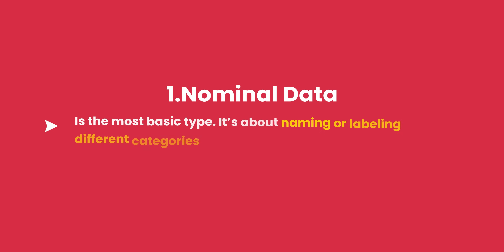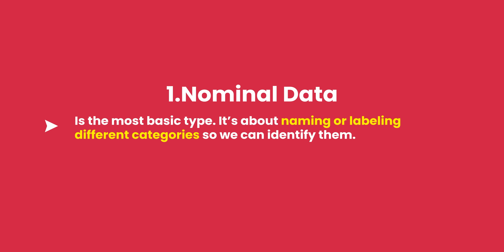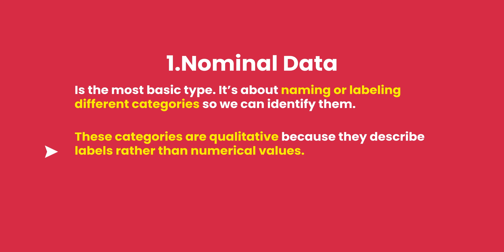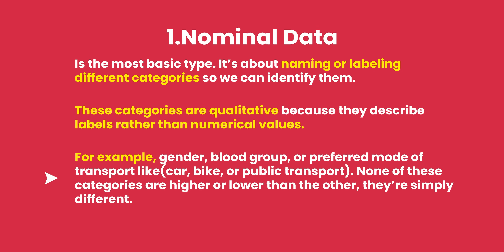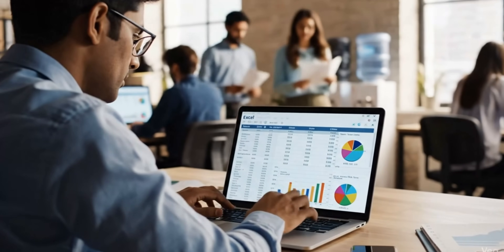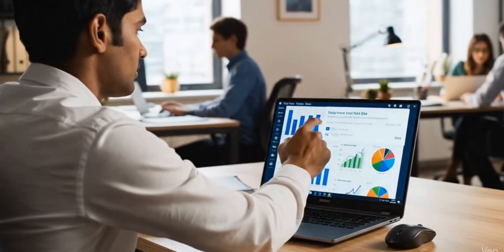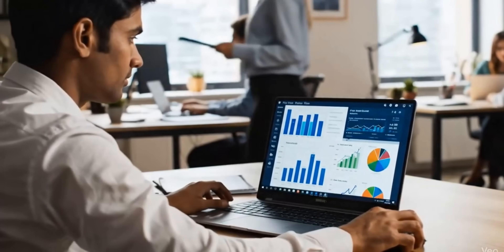Nominal data is the most basic type. It's about naming or labeling different categories so we can identify them. These categories are qualitative because they describe labels rather than numerical values. Examples include gender, blood group, or preferred mode of transport like car, bike, or public transport. None of these categories are higher or lower than the other — they are simply different. If you are working in Excel or Power BI, you would usually summarize nominal data using counts or percentages.